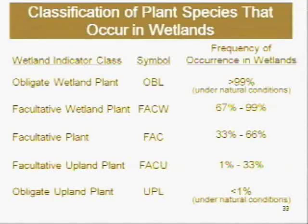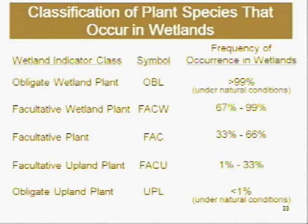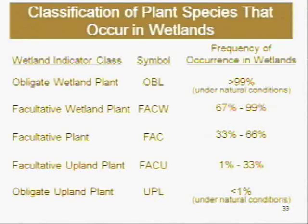Of the roughly 6,000 plant species in California's natural habitats, the Fish and Wildlife Service finds that 1,933 occur with some frequency in wetlands. Each species is assigned a frequency distribution, providing an estimate of the probability that a given individual is growing as a hydrophyte. These classifications are not based on sampling data; rather, they are based on professional judgment and consensus opinion of agency biologists. Obligate wetland species are almost always hydrophytes; facultative-wet plants are usually hydrophytes; facultative plants commonly occur as either a hydrophyte or non-hydrophyte; facultative-upland plants are occasionally hydrophytes but usually occur in uplands; and upland plants are rarely hydrophytes.